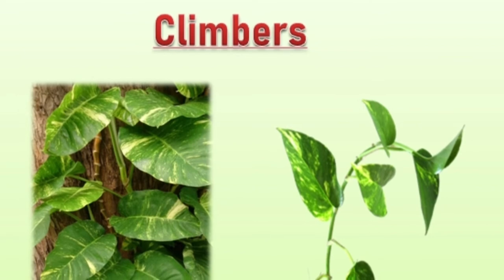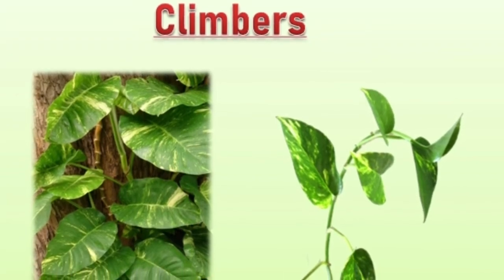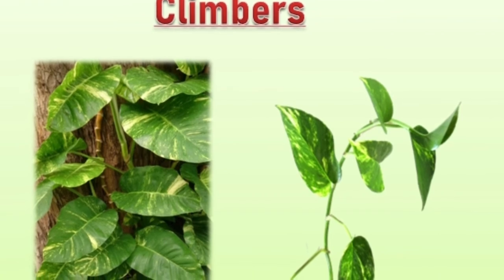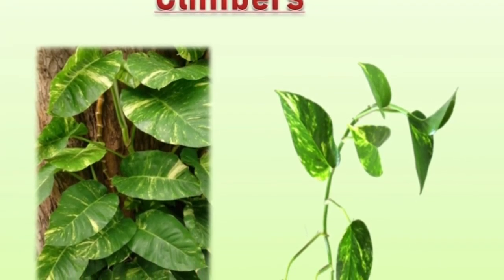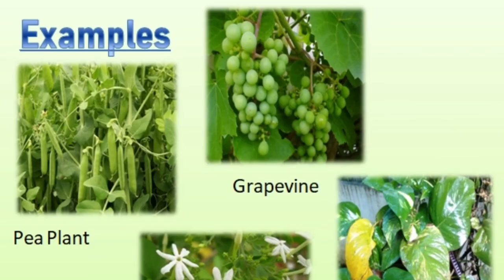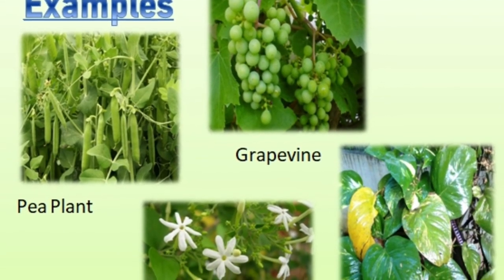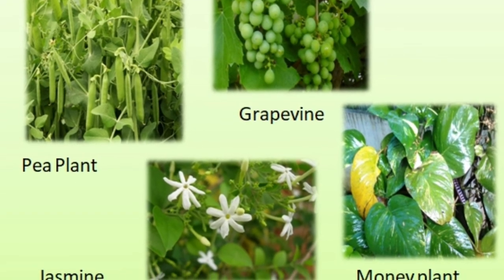Climbers have very thin, long and weak stems which cannot stand on their own. But they can use external support to grow vertically and carry their weight. They use special structures called tendrils to climb. Examples include Pea plant, Grapevine, Jasmine, Money plant, etc.